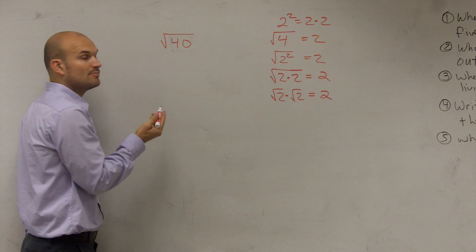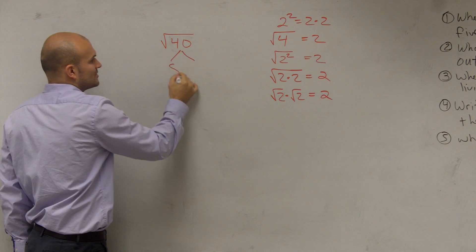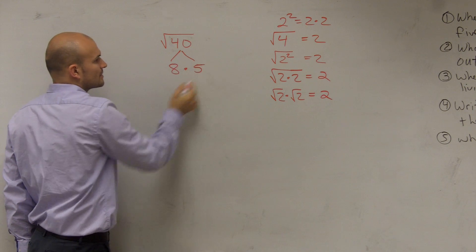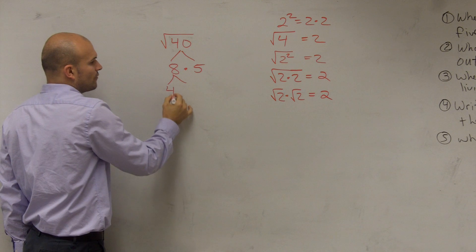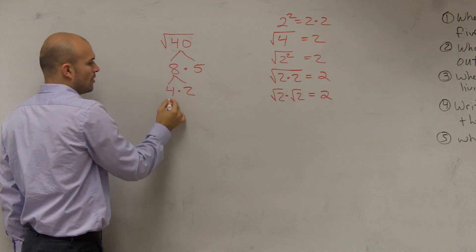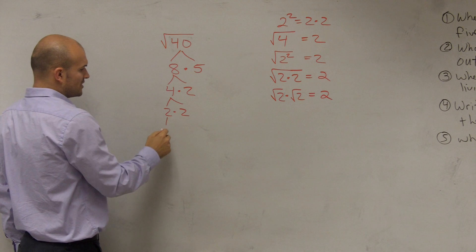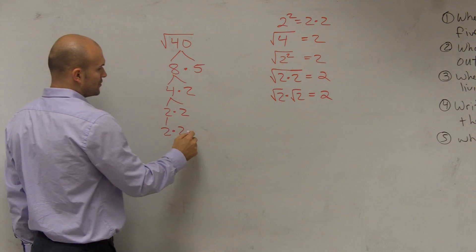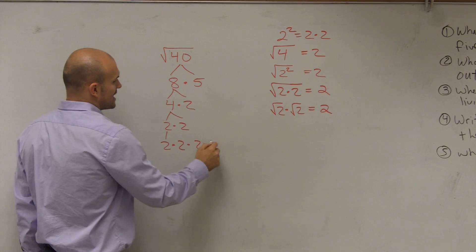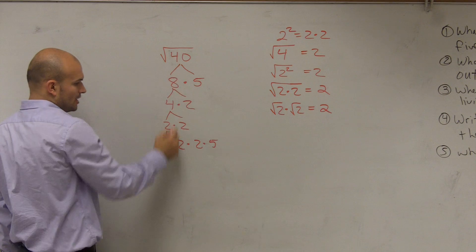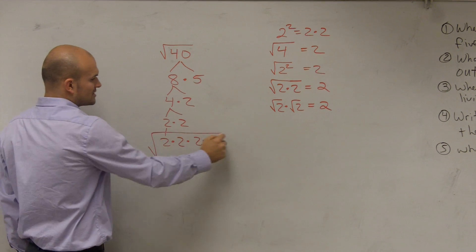So I'm going to take the number 40 and I'm going to break this down. I can factor this to an 8 times 5. 8 I can break down into a 4 times 2, and 4 I can break down into a 2 times 2. So therefore, the factored version of this is 2 times 2 times 2 times 5, and this is still all under my radical, which I'll just kind of rewrite here.